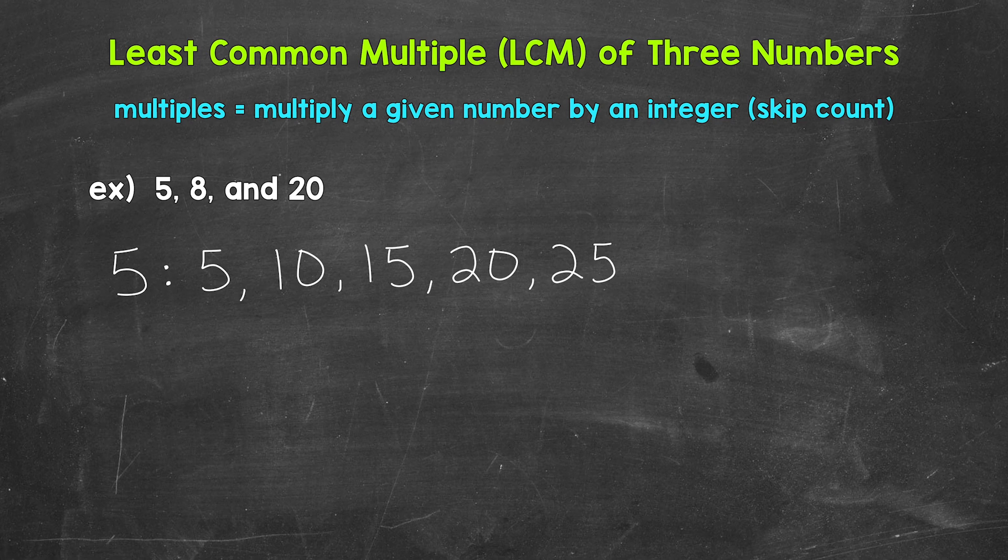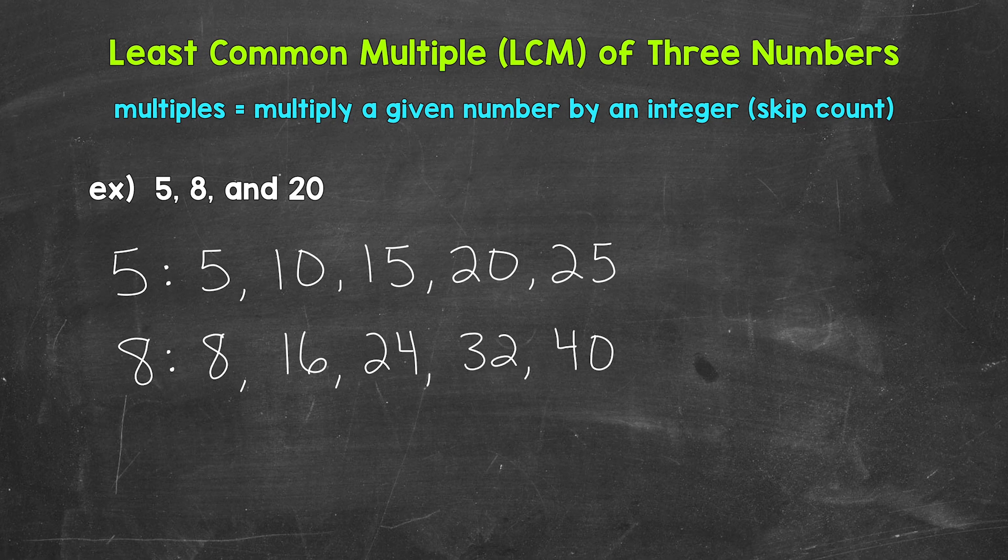Now let's list the first 5 multiples of 8. 8 times 1 is 8, 8 times 2 is 16, 8 times 3 is 24, 8 times 4 is 32, and then 8 times 5 is 40. So 8, 16, 24, 32, 40, so on and so forth.